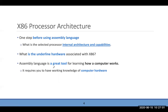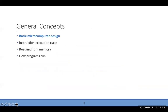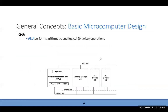Think of assembly language as a tool for learning how a computer works. The basic microcomputer architecture has IO, memory, a microprocessor, and buses. Inside the CPU — the microprocessor — we have the Arithmetic and Logic Unit (ALU), responsible for addition, subtraction, multiplication, division, and logical operations like AND, OR, XOR, NOR.